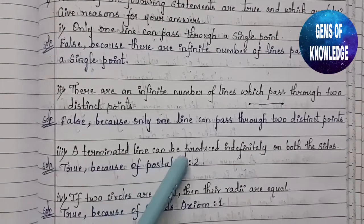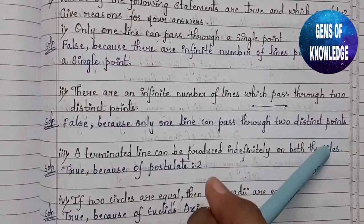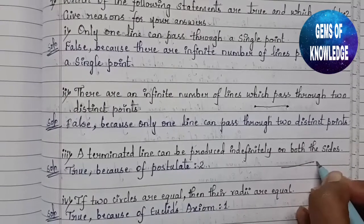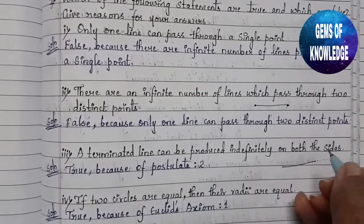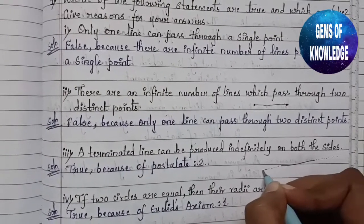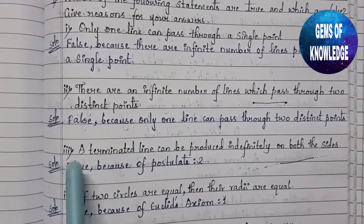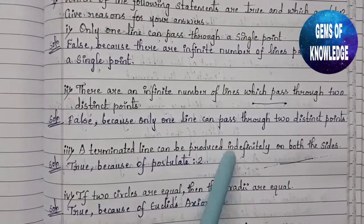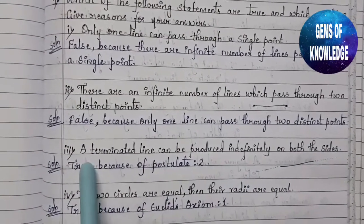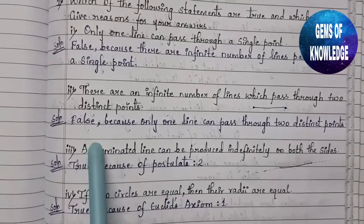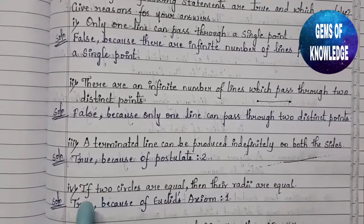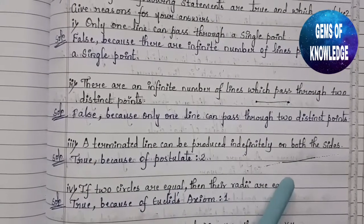The third statement: a terminated line can be produced indefinitely on both sides. A terminated line can be produced to whatever extent I want from both sides. So yes, this is true — because of Postulate 2. This statement is essentially the statement of Postulate 2.